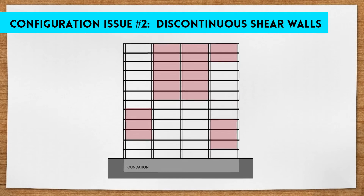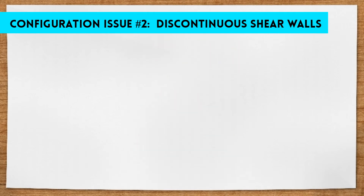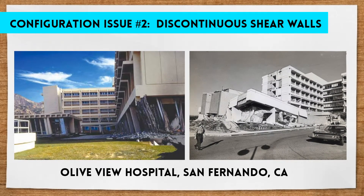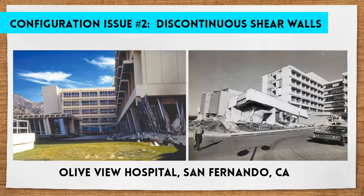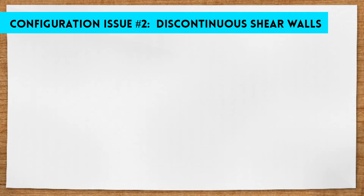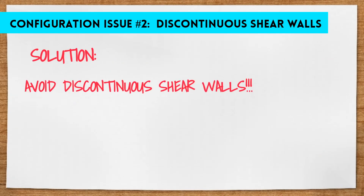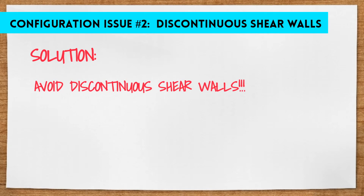A great example of this was Olive View Hospital in San Fernando, California. It was constructed with discontinuous shear walls and suffered major destruction in a 1971 earthquake. The only real solution to this issue is to avoid discontinuous shear walls altogether. If they are being used in the design of a building, they should be used properly.